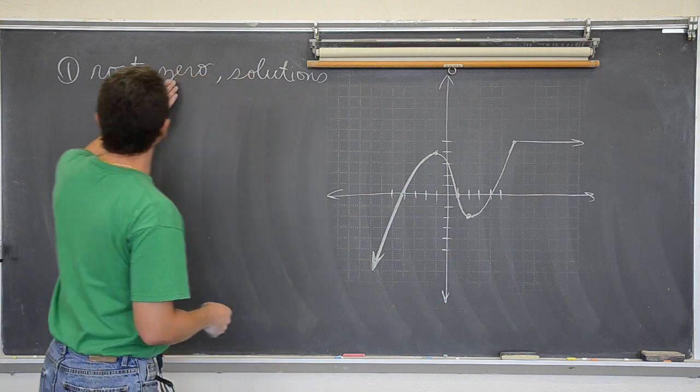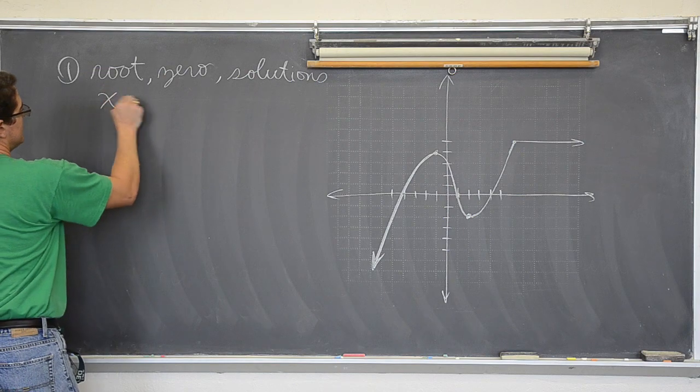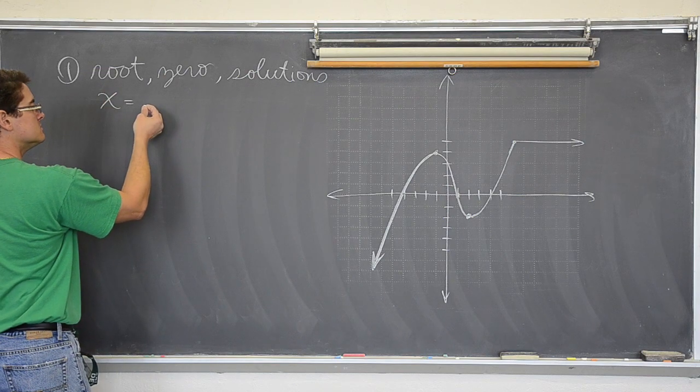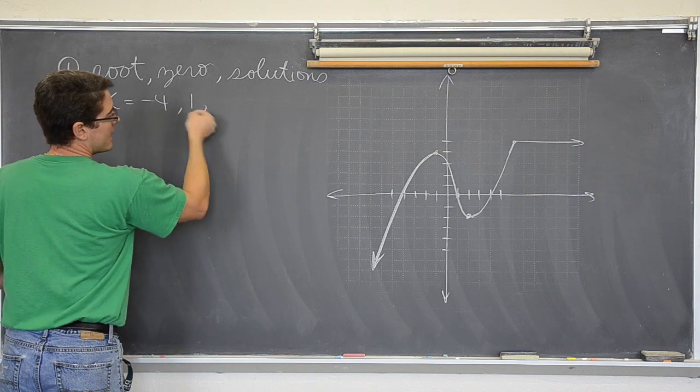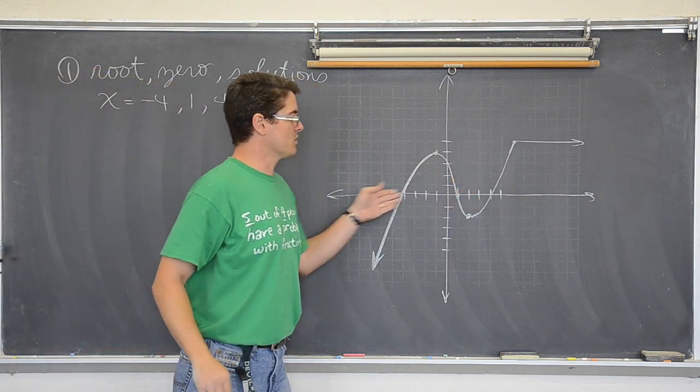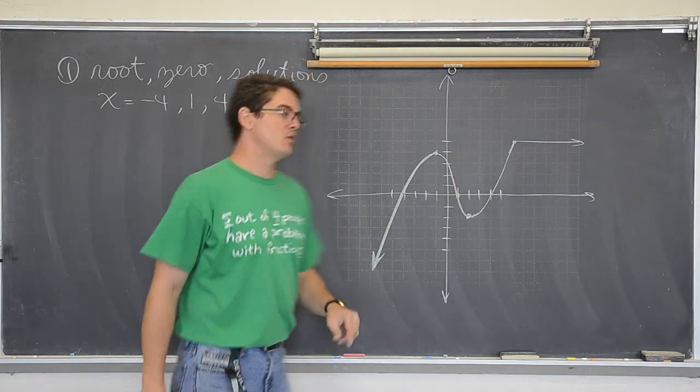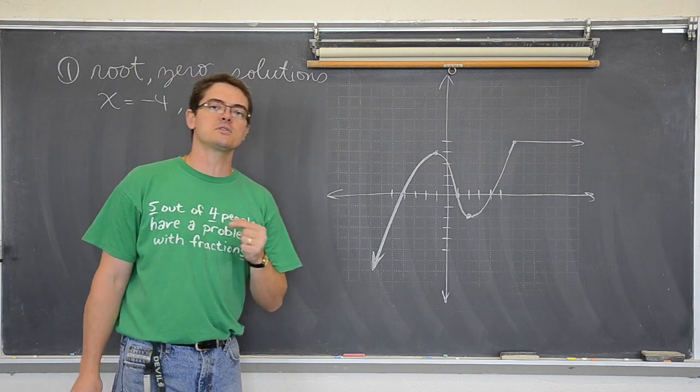So the solutions, the zeros and the roots, well that is it. It is x equals negative four, one, and positive four. These are the solutions, the zeros, the roots of this graph. If you have a TI-83 or 84 and you want to find an x intercept, you are going to look for a zero.